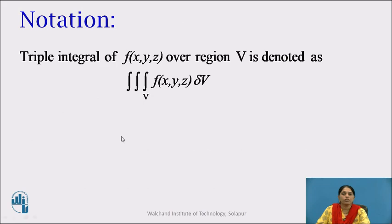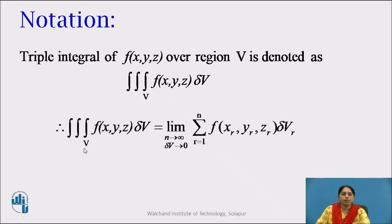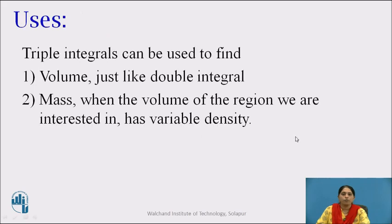Let us see the notations. The triple integral of f(x, y, z) over the region v is denoted as triple integral over the region v of f(x, y, z) delta v. Therefore, triple integral over v of f(x, y, z) delta v equals the limit as n tends to infinity and delta v tends to 0 of the summation r equal to 1 to n of f(xr, yr, zr) times delta vr.